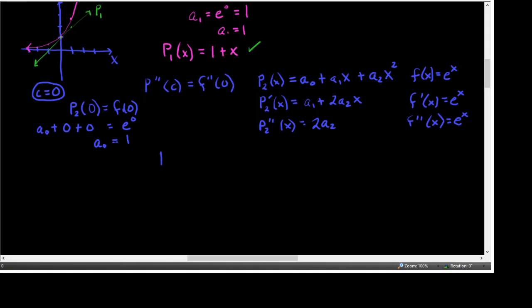The second thing we want to make true is that for the second degree polynomial the first derivative evaluated at 0, our center, equals the first derivative of our function at 0, so they have the same slope of tangent line there. Substituting 0 into the polynomial's first derivative gives A sub 1 plus 2 A sub 2 times 0, which is 0, and F prime of 0 is E to the 0. So A sub 1 is 1, just like last time.